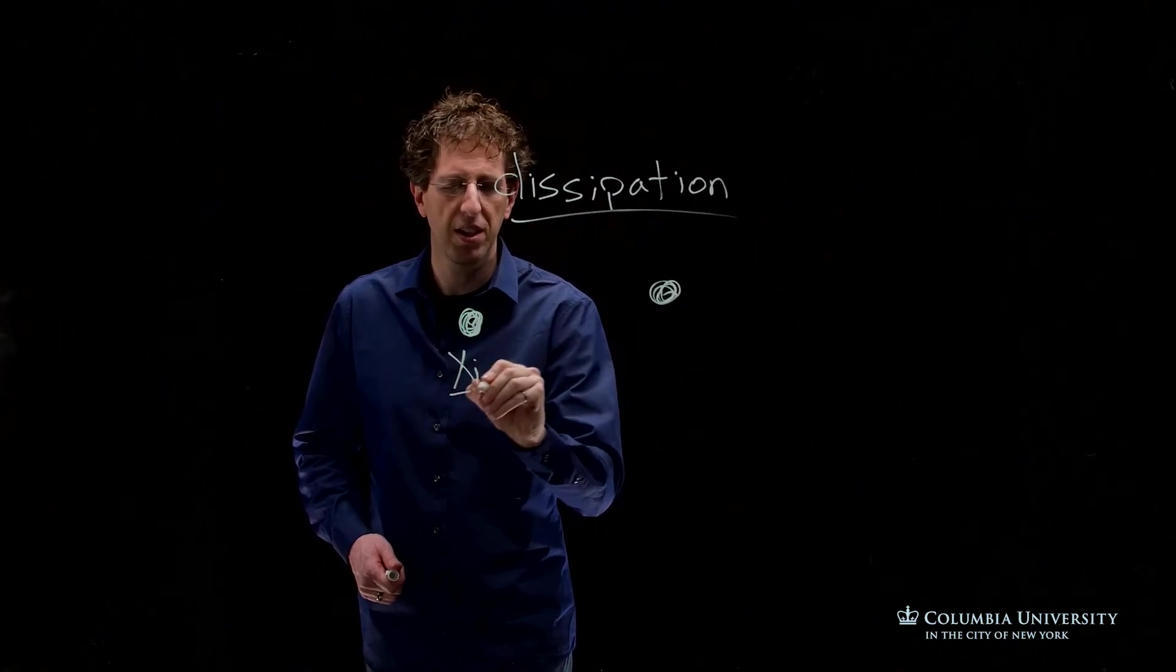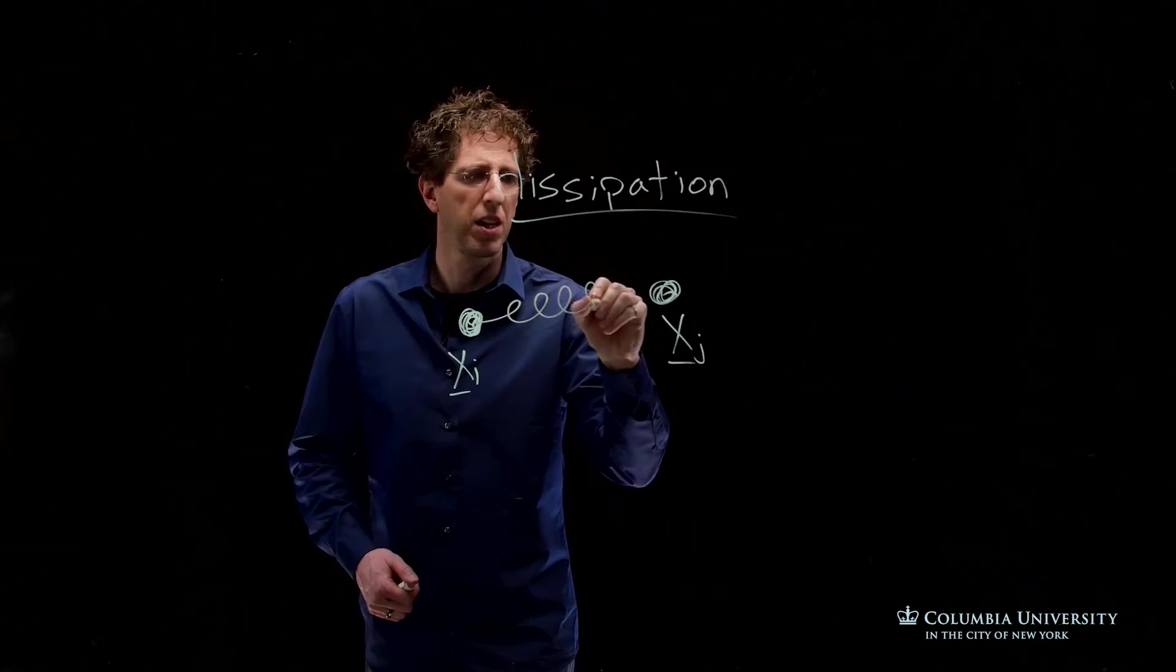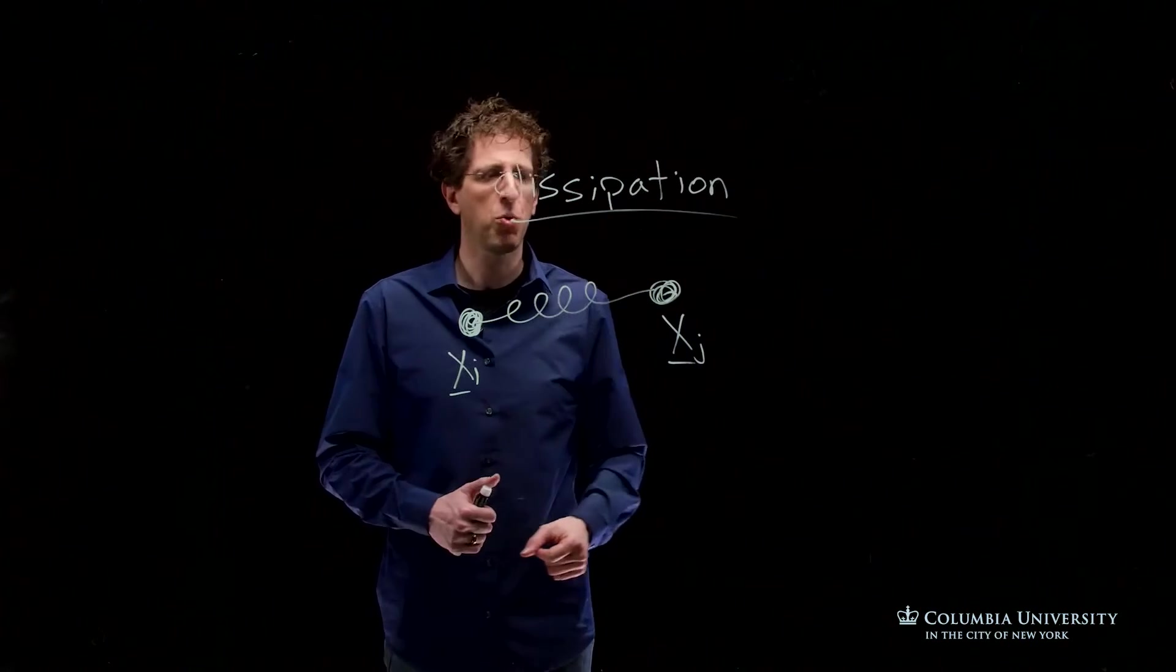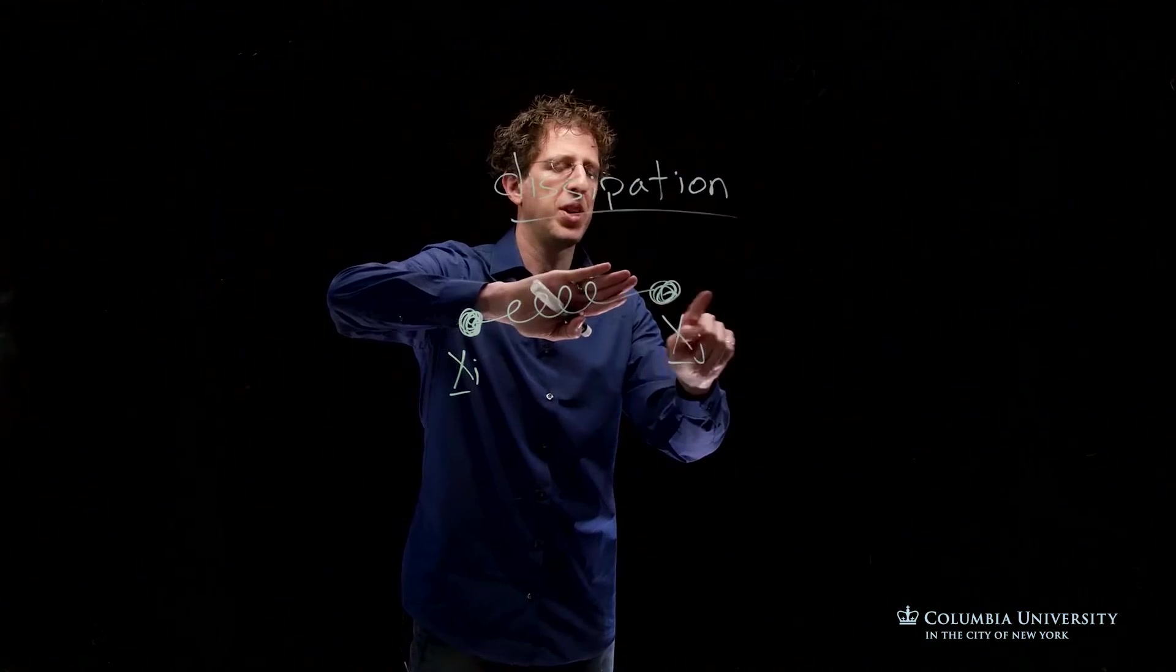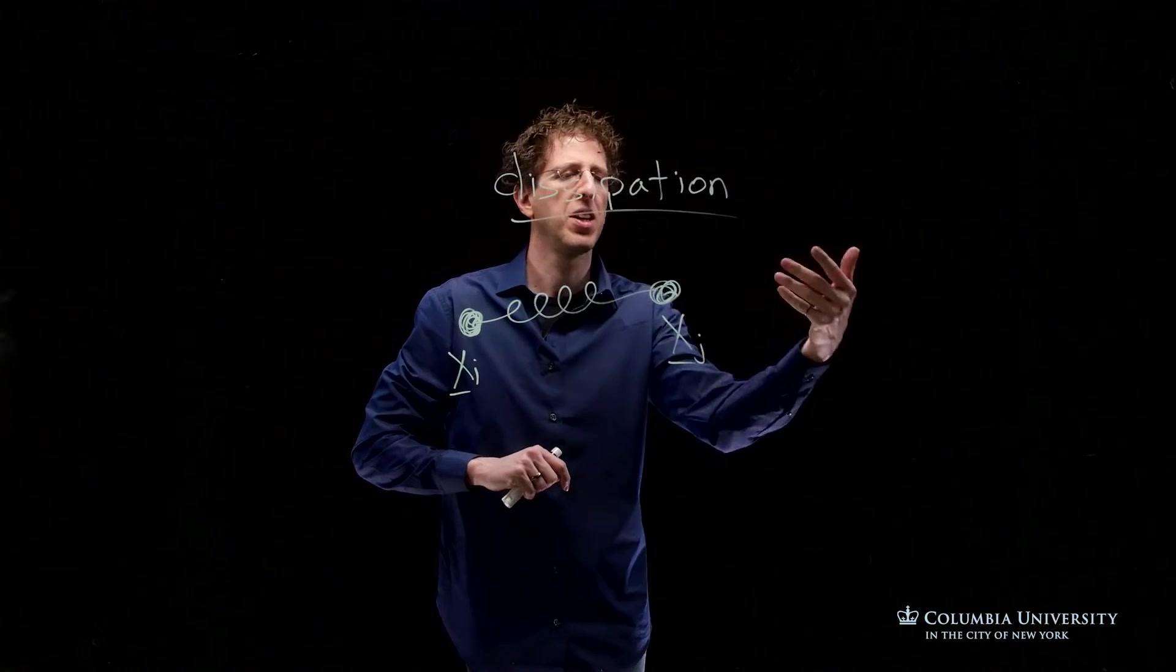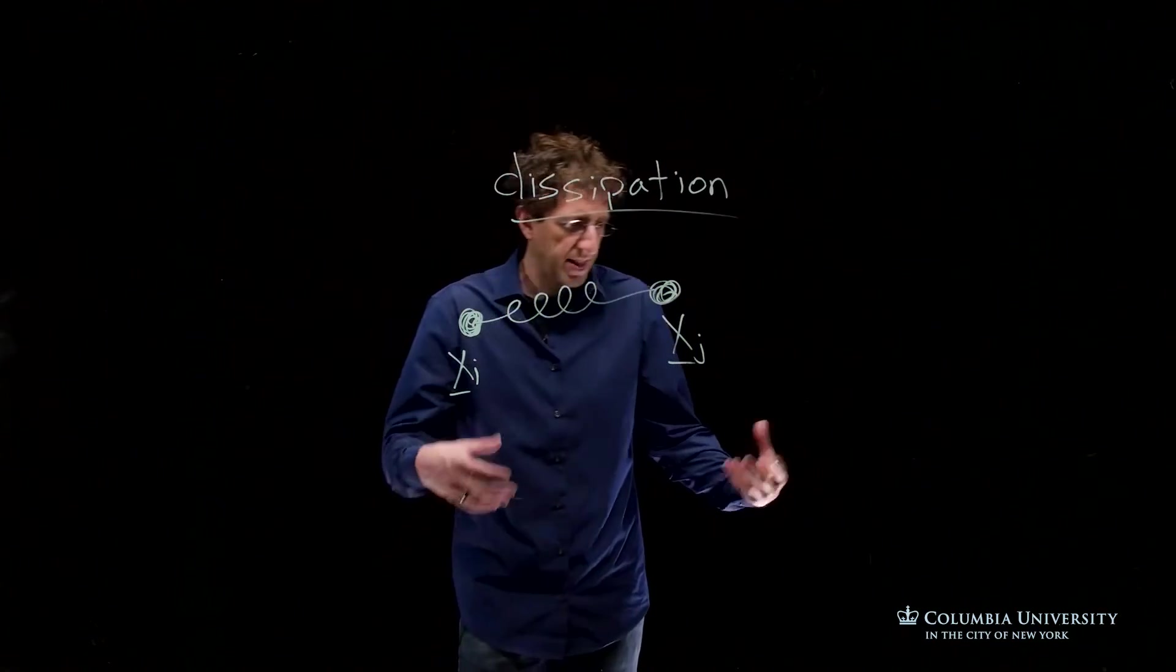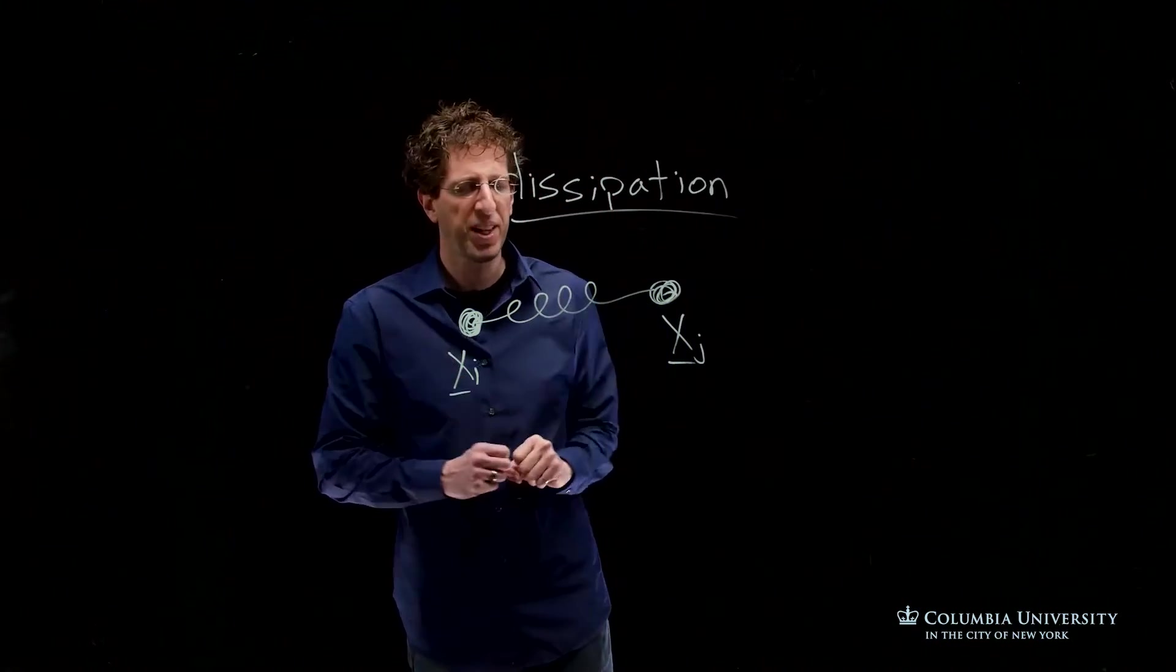How does loss occur in a spring connecting particles i and j? One way to model the loss is by modeling separately, just focusing on this particle, modeling the air hitting this particle, so a kind of drag on this particle in isolation. But sometimes the air drag may be negligible, but there may be a mechanical dissipation inside the spring itself.